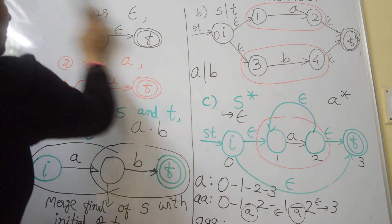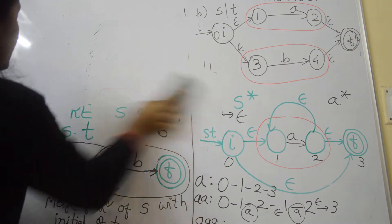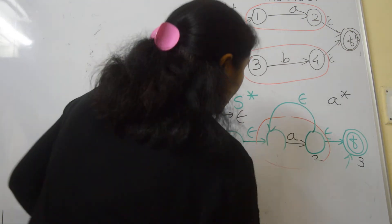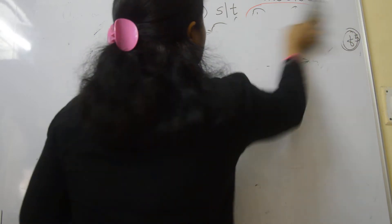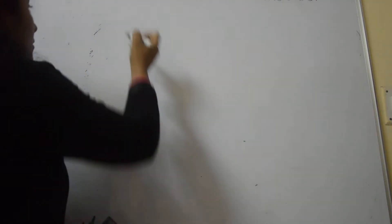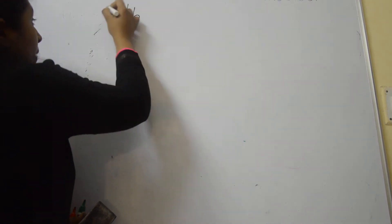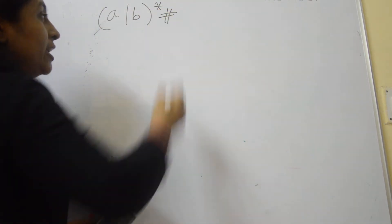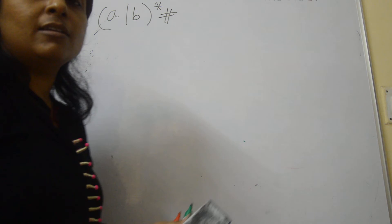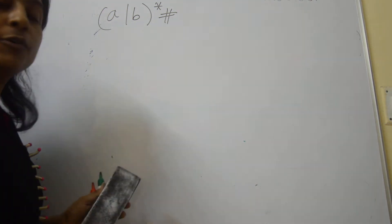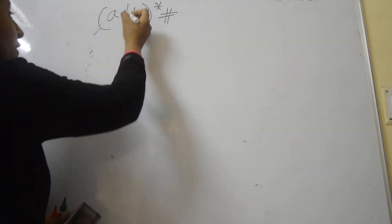Let us take one example: (A∪B)*#. Here, the hash symbol indicates a special end marker that leads to the final state.